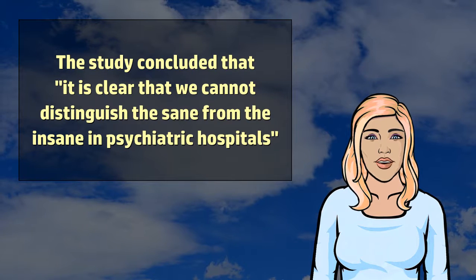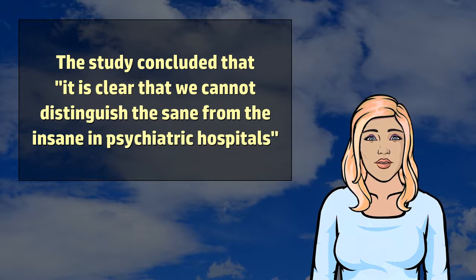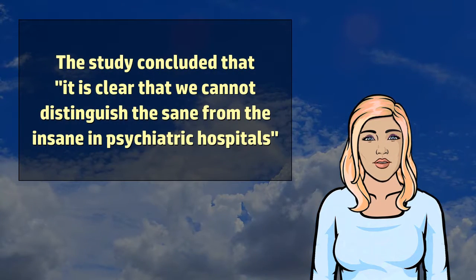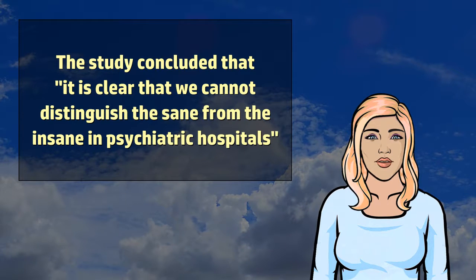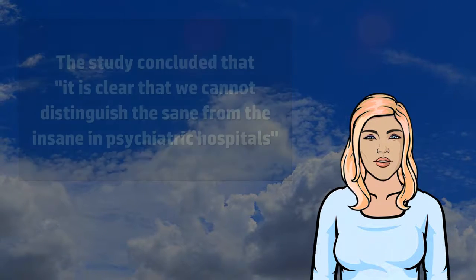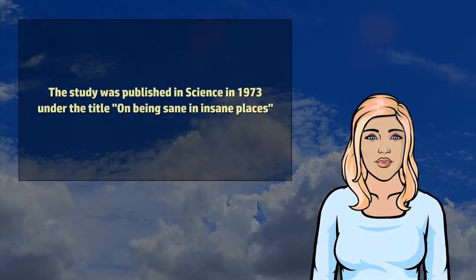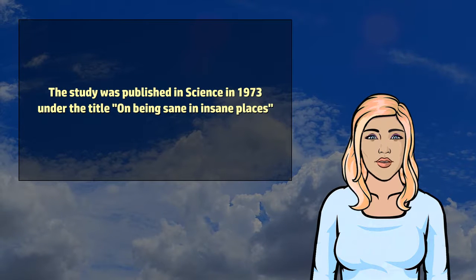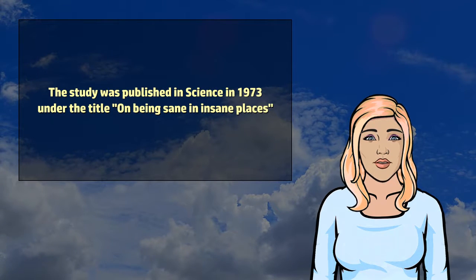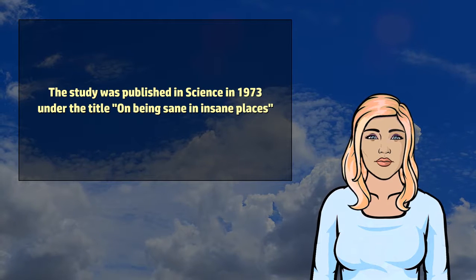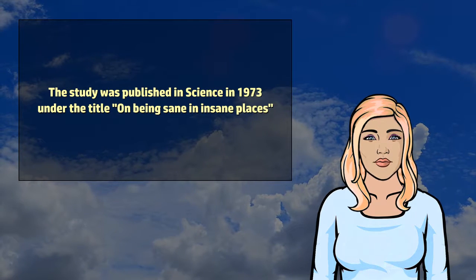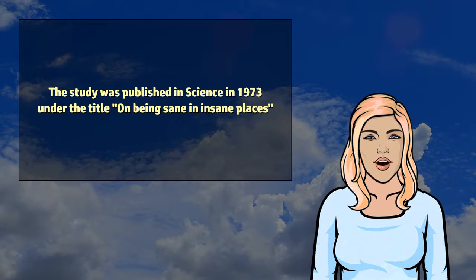The study concluded it is clear that we cannot distinguish the sane from the insane in psychiatric hospitals, and also illustrated the dangers of dehumanization and labeling in psychiatric institutions. The study was published by the journal Science in 1973 under the title "On Being Sane in Insane Places." It is considered an important and influential criticism of psychiatric diagnosis.